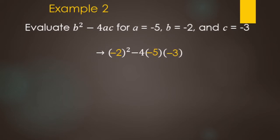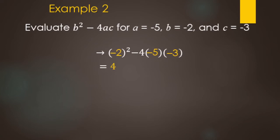In PEMDAS, the P stands for grouping symbols — these parentheses here are multiplication parentheses, not grouping symbol parentheses, so P is done. For E — exponents — we do negative 2 squared: negative times negative is positive, and 2 times 2 is 4. Now for multiplication: we have negative 4 times negative 5 times negative 3. It helps to handle the signs first — negative times negative is positive, times another negative makes negative. Then 4 times 5 times 3: 4 times 5 is 20, times 3 makes 60.